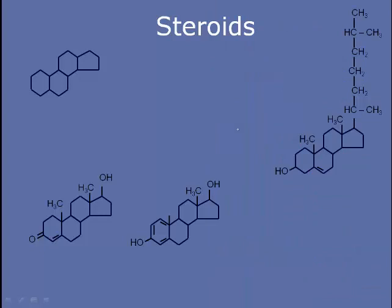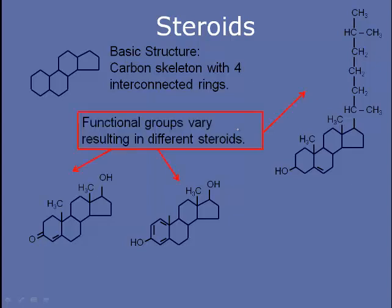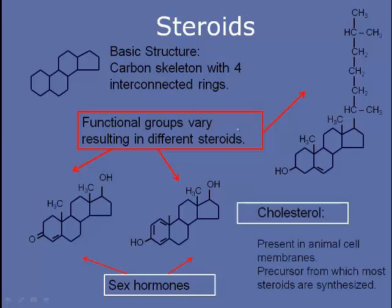There's another class of lipids called steroids, and they look nothing like phospholipids or fats. However, they all share the basic structure of a carbon skeleton with four interconnected rings, with different variations based on functional groups attached to this basic structure. Examples include the sex hormones testosterone and estrogen, and also cholesterol, which is present in animal cell membranes and helps regulate membrane integrity as temperature changes. Cholesterol is also a precursor from which most steroids are made — our bodies can take ingested cholesterol and modify its functional groups to build sex hormones and other steroids.